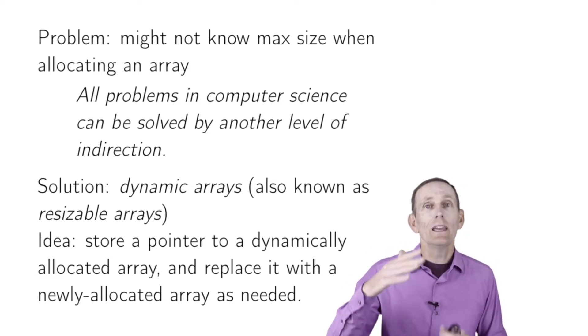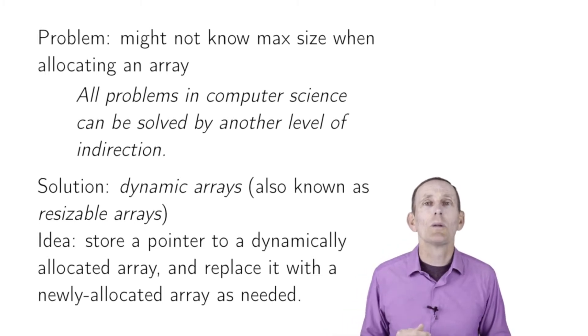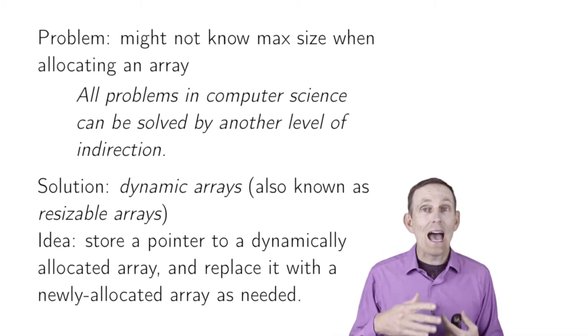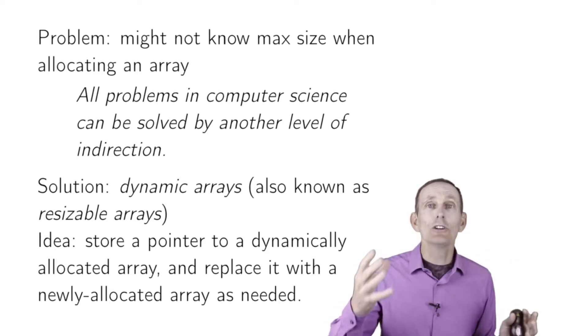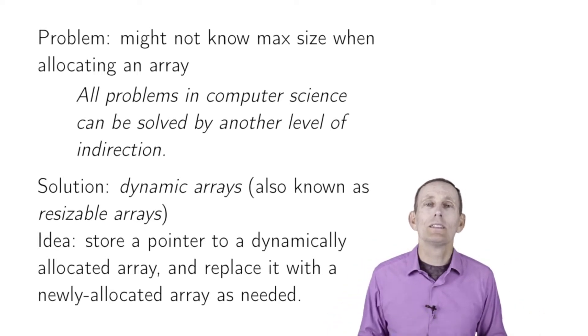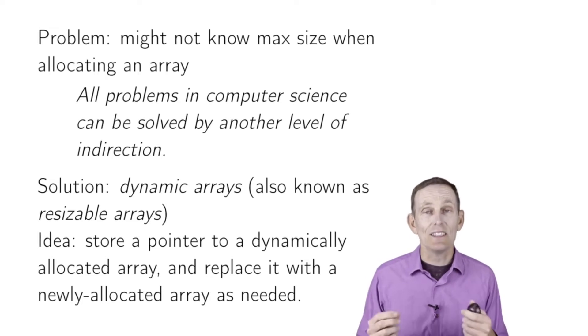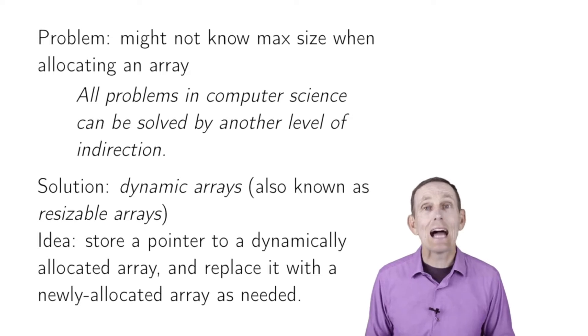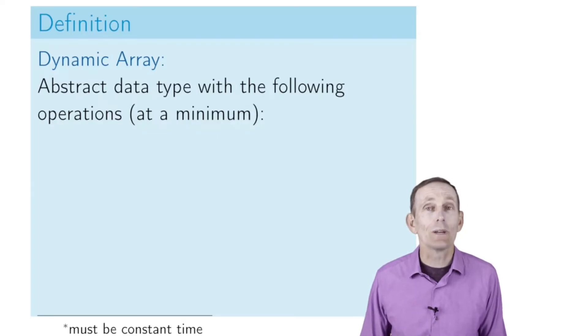That allows us to update that pointer. If we start adding more and more elements, when we add too many, we can allocate a new array, copy over the old elements, get rid of the old array, and update our pointer to that new array. These are called dynamic arrays or sometimes resizable arrays. This is distinct from dynamically allocated arrays, where once it's allocated, it doesn't change size.